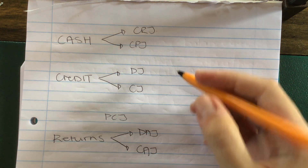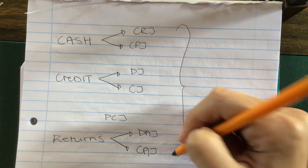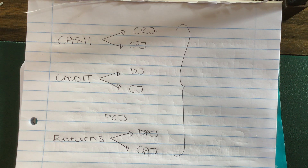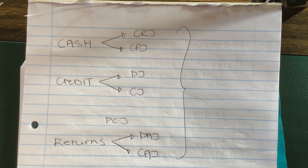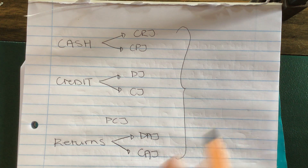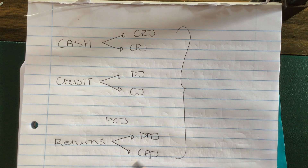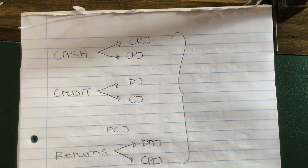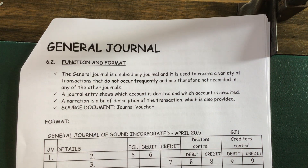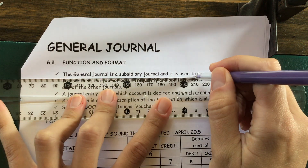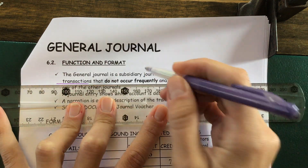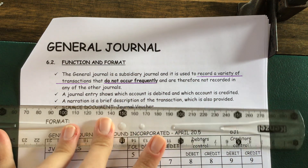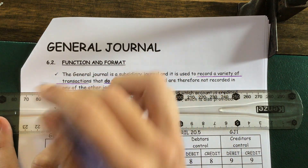Now, the transactions I'm going to talk about do not fit into any one of these journals. These transactions also don't happen frequently enough for us to create a separate journal for them. So all of these transactions will go into the general journal because of how infrequently they happen. That is why we created the general journal — for these transactions that don't have a home, if you want to call it that. The general journal is used to record a variety of transactions that do not occur frequently and therefore can't fit in any of the other journals.